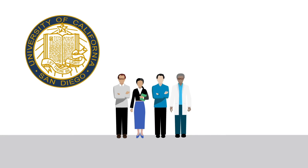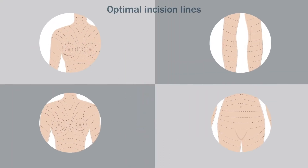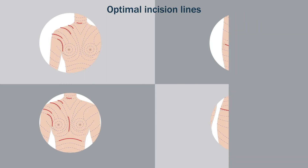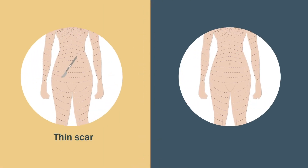To minimize scarring, researchers at the University of California, San Diego, and Military Central Hospital Koblenz in Germany proposed that optimal incision lines should be determined based on the direction of stria. Stria, which generally occur during puberty and pregnancy, are caused by folds of collagen that form perpendicular to skin tension lines or main folding lines. A thin scar is formed when the incision is made parallel to these bands, but a broad scar occurs when the incision cuts across these bands due to retraction of the collagen fibers.